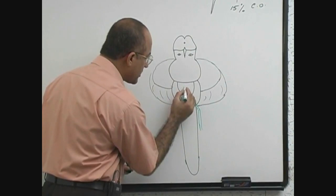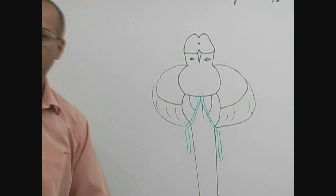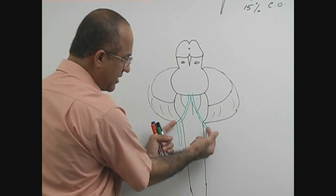Now, these vertebral arteries meet each other at the pontomedullary junction, right and left. Vertebral arteries are going up through the foramina in the transverse processes of the cervical. Then they move medially.